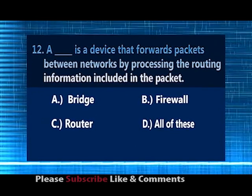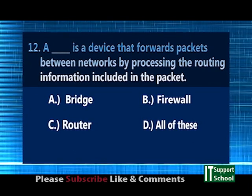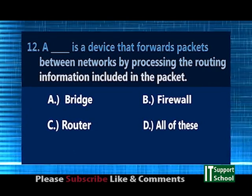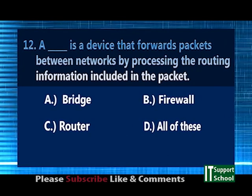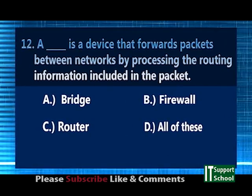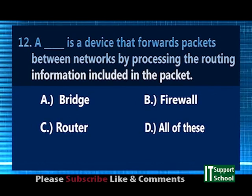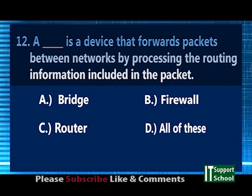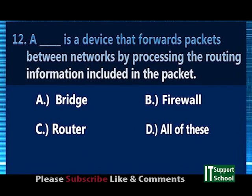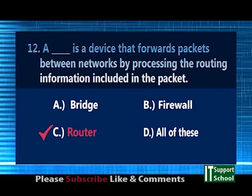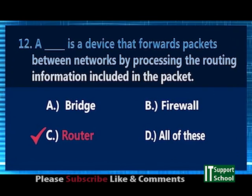Question number 12. A device that forwards packets between networks by processing the routing information included in the packet. A. Breeze, B. Farewell, C. Router, D. All of these. Answer: Option C, Router.